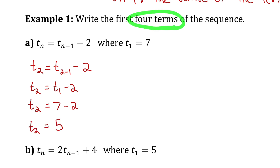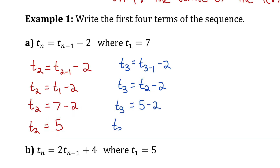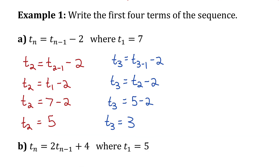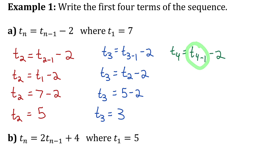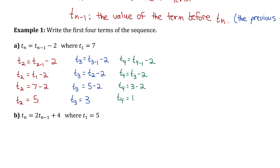Since I want the first 4 terms, I now have to find term 3 and term 4. Let's find term 3 by replacing n with 3. Simplifying 3-1, I see that to find term 3, I take term 2 and subtract 2. Term 2 is 5, so term 3 is 3. Then for term 4, term 4-1 means term 3, and term 3 is 3, so term 4 is 1. The first four terms of this sequence are 7, 5, 3, and 1.